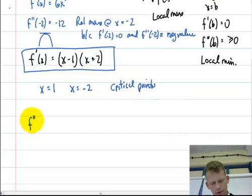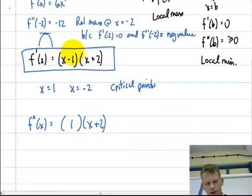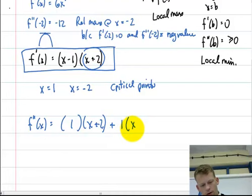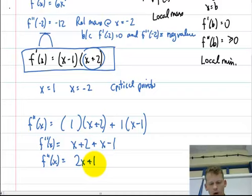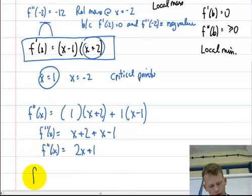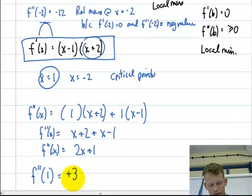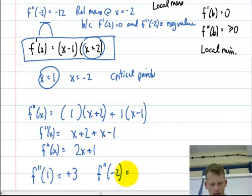Now I would take my second derivative. Using the product rule, the derivative of the first part is 1 times (x plus 2), and I would add the derivative of the second part: the derivative of (x plus 2) is 1 times (x minus 1). Simplifying, I get 2x plus 1 as my second derivative. I don't need to set this to 0 — I just plug in my critical points. f double prime at 1 yields positive 3, and f double prime at negative 2 yields negative 4 plus 1, which is negative 3.